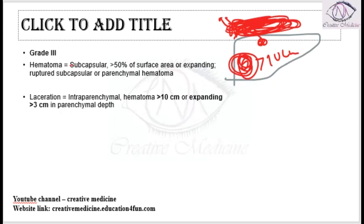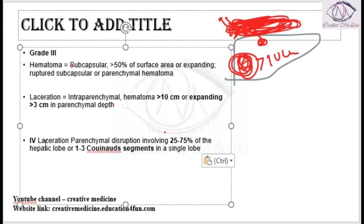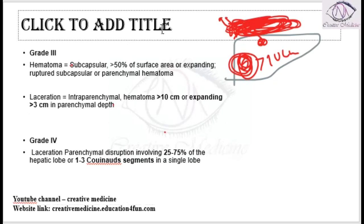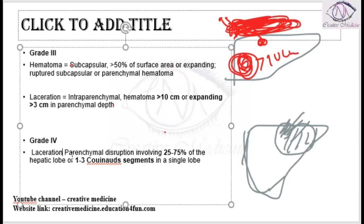Then we have Grade 4. In Grade 4, laceration is seen with parenchymal disruption of 25 to 75% of a hepatic lobule. Alternatively, there is disruption of 1 to 3 Couinaud segments in a single lobe. Then it is called Grade 4.